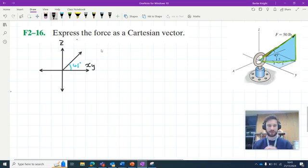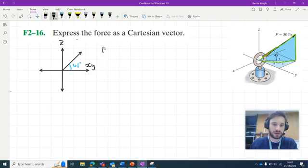Using this diagram, this becomes a deadly simple 2D idea where we can say that the z component is... Oh, I forgot to add the magnitude. The magnitude is 50 pounds. So we can say that the z component here is 50 sine 45, and we can say that the xy component is equal to 50 cos 45.